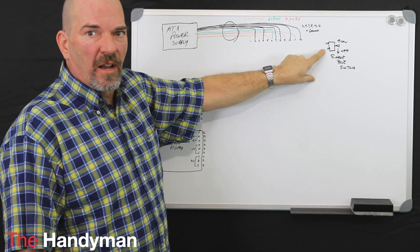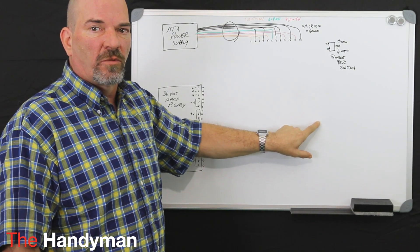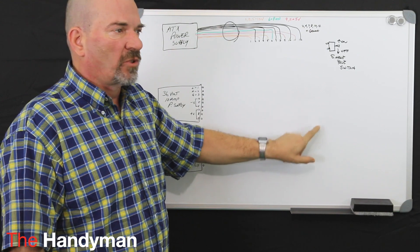You're going to need a single pole on-off switch, and you're going to need another terminal strip for your 120 volt power, which we'll draw that in right now.